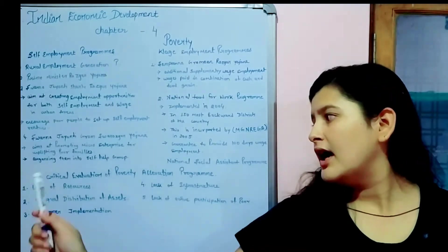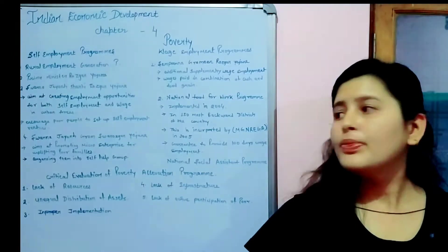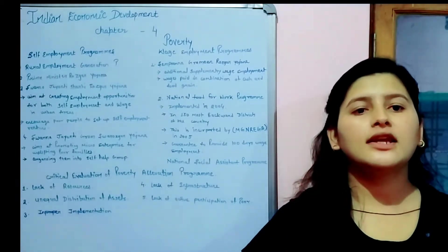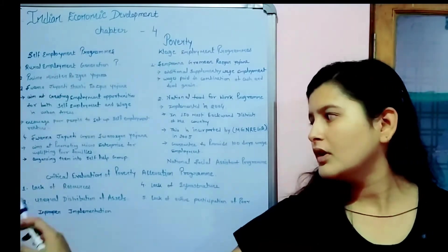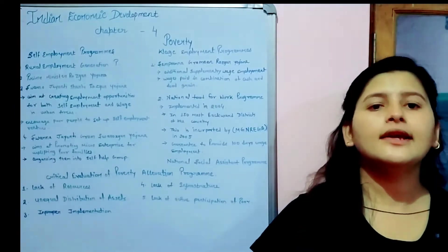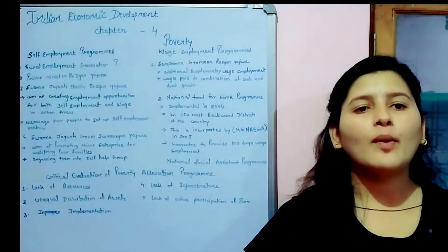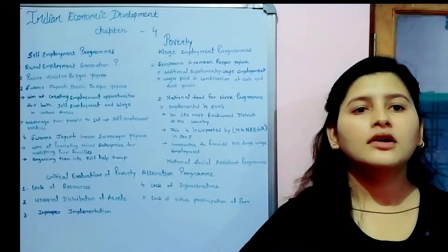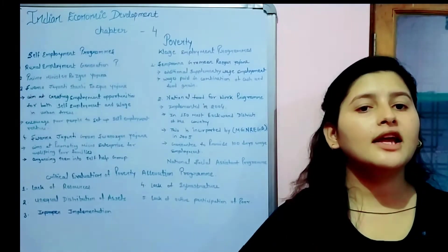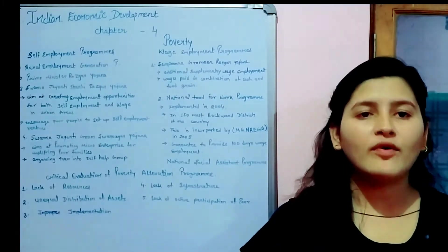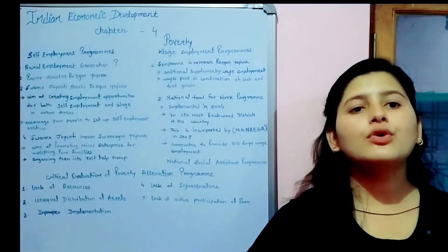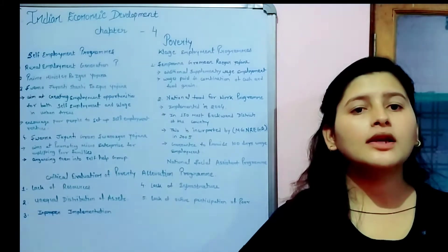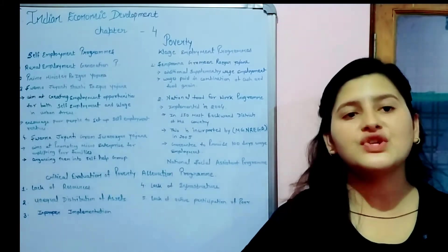Now coming to the critical evaluation of poverty alleviation programs — the drawbacks of the programs set up by the government that show they are not progressing effectively. First, lack of resources: our country's population is very large, and our wants are unlimited in relation to limited resources. Because the population is so large, the poverty level remains high, and the resources available to meet those programs are insufficient.